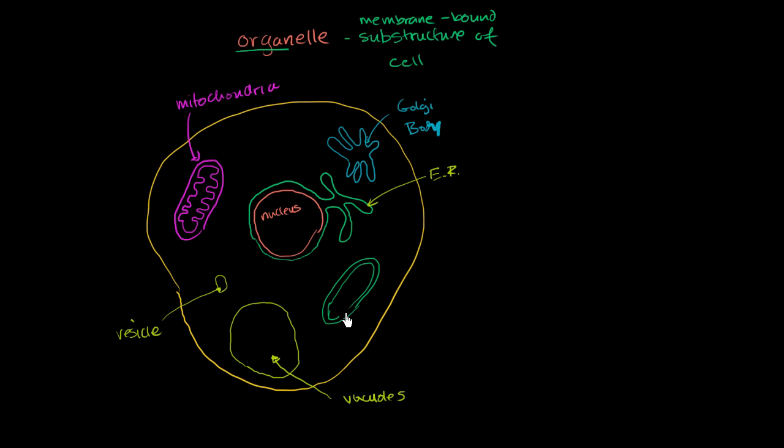So this right over here, this is a chloroplast. I'll go into much more detail with those when we talk about photosynthesis. A chloroplast is a more particular form of a plastid. So I just drew a chloroplast, but that's a more particular form of a plastid.